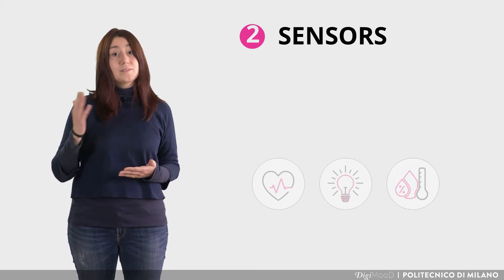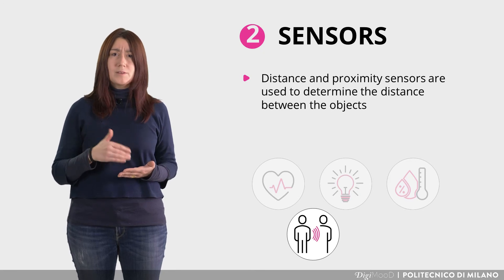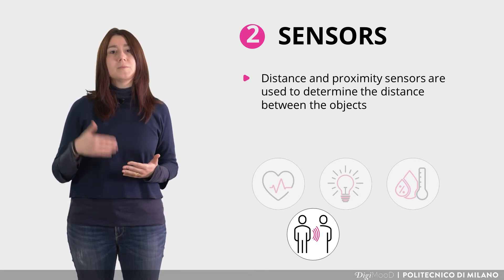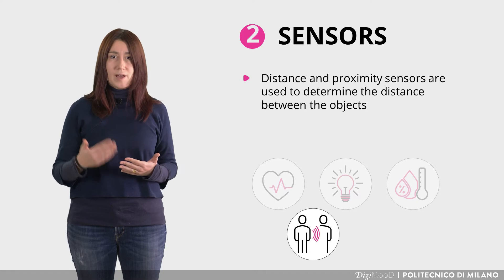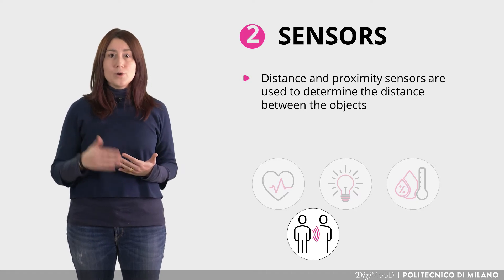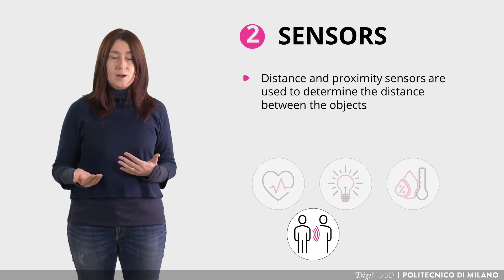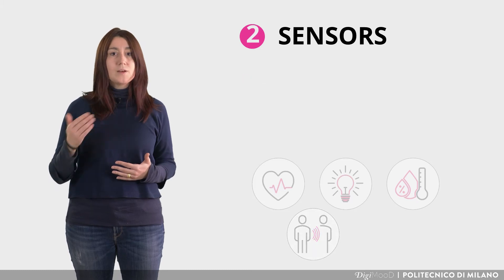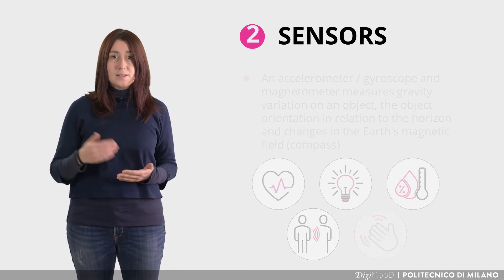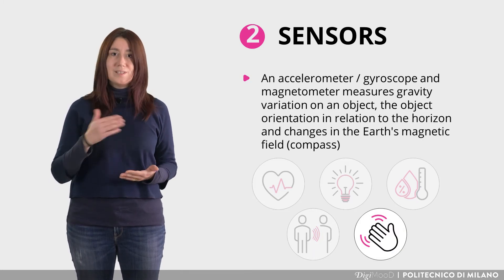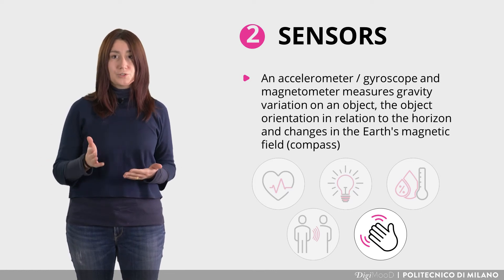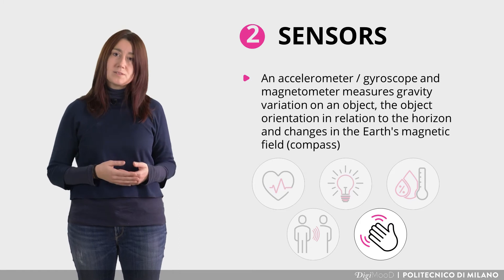Fourth, distance sensors are based on the radar principle — the distance is determined by measuring the flight time of the flow, knowing the speed of sound or light waves through the air. Fifth and last, IMU sensors measure position, orientation and direction of a body in space.